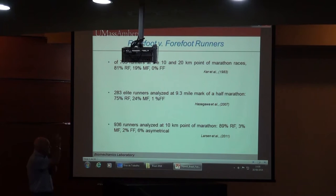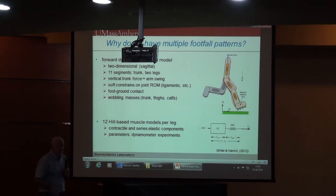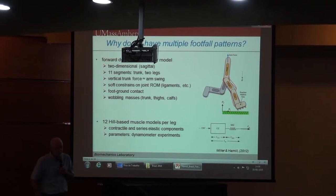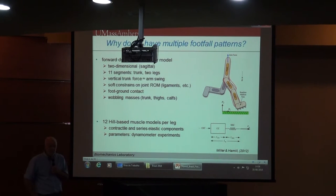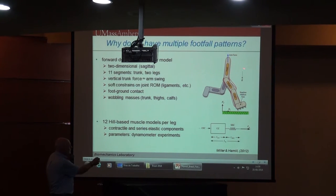Another study found basically similar results, done in New England where I come from. The question we asked first was: why do we have multiple footfall patterns? It seems a logical question. We used a biomechanical technique called forward dynamics — we built a model and gave it different functions. The model looks like this: it's a two-dimensional model with 11 segments and 12 muscle models per leg based on a Hill-type muscle model.